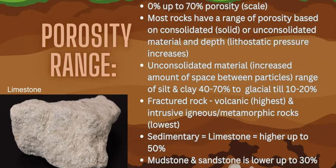Rocks like limestone are very high in the porosity range, which goes from zero up to 70 percent. The general porosity of rocks is between 20 and 30 percent across the Earth's surface, so 70 percent is way above average. Glacial till, which is unconsolidated, has a small range of 10 to 20 percent. Mudstone and sandstone are higher, up to 30 percent, and fractured igneous and metamorphic rocks can be up to 40 or 50 percent. All of this comes down to the characteristics of the rock, which dictate its porosity range.